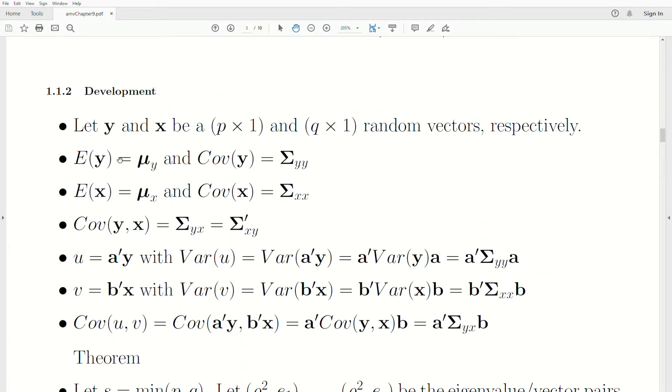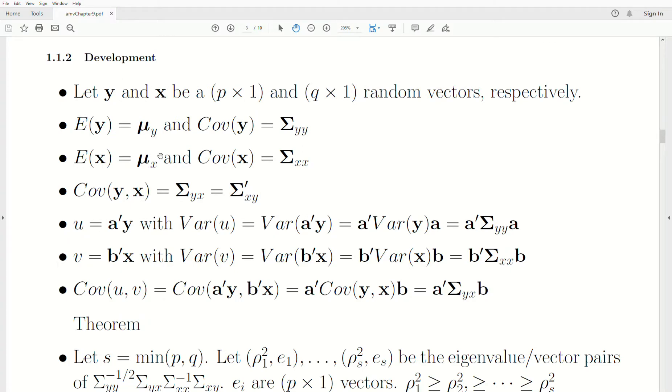Now, brief development. Let Y and X be p by 1 and q by 1 random vectors, respectively. So they don't have to be the same number of variables in each of these. They have respective means and covariances. The covariance of Y is sigma YY, covariance of X is sigma XX. There's a covariance structure between Y and X, and we're going to call that sigma YX or sigma XY if the X and Y are switched here.